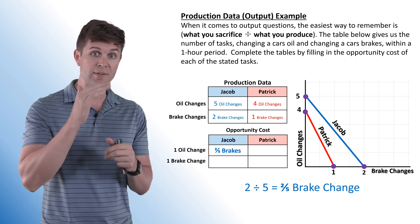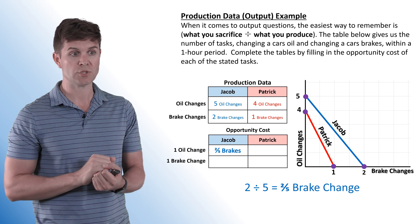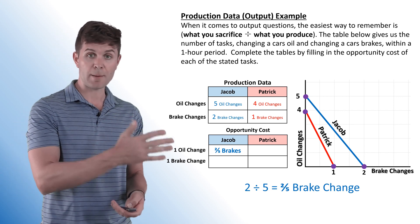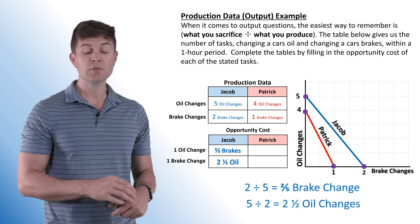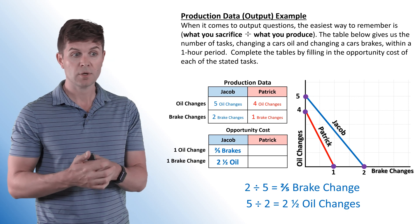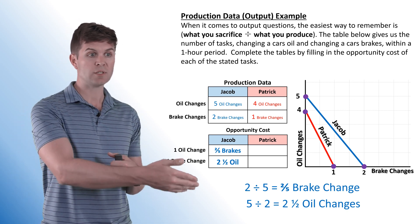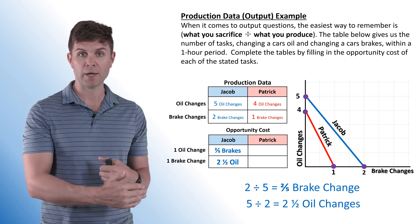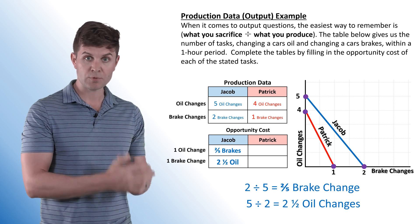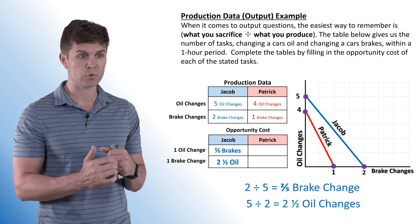Two-fifths of a brake change is the opportunity cost of one oil change. In the time it takes to do one oil change, you could have done two-fifths of a brake change. Inversely, the opportunity cost of one brake change is going to be two and a half oil changes — five divided by two — what we sacrifice (the five oil changes) divided by the two brake changes.